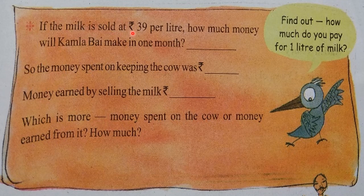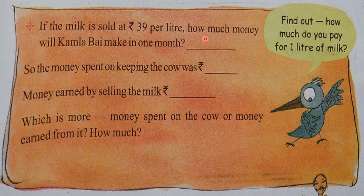If the milk is sold at Rs. 39 per liter, how much money will Kamla Bai make in one month? In one month, how much milk will the cow generate? 240 liters. So 240 × 39 — that much amount Kamla Bai will earn by selling the milk. The money spent on keeping the cow was Rs. 5,550 and money earned by selling the milk is that amount. So we find the difference also — which is more: money spent on the cow or money earned from it?